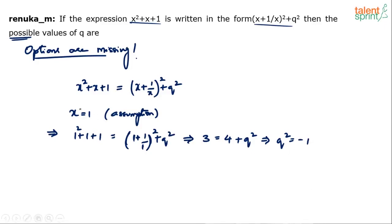Try something else — that's how substitution works. If one value doesn't satisfy, you try another. So this gives us an incorrect relation; let's try x=2.